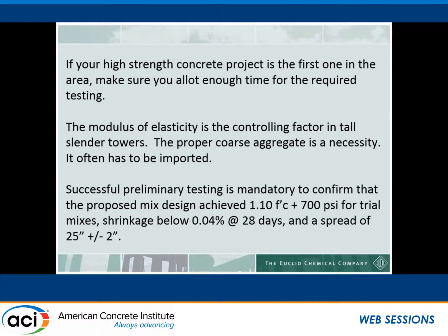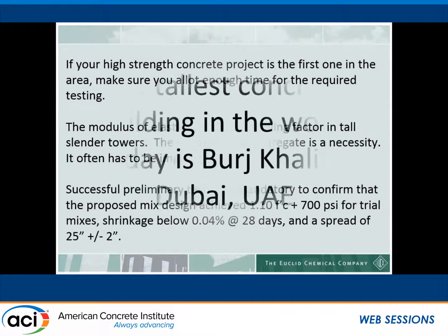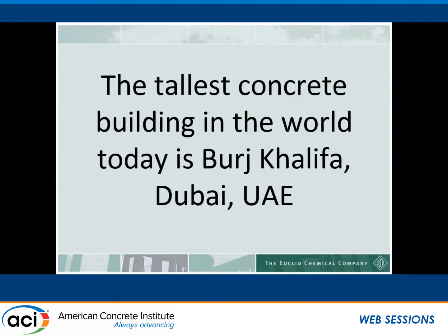Modulus of elasticity is a controlling factor in tall, slender towers. The proper coarse aggregate is a necessity and often has to be imported to obtain the right results. Successful preliminary testing is mandatory to confirm that the proposed mix design achieves 1.1 F prime C plus 700 PSI for trial mixes, with shrinkage below 0.04% at 28 days and a spread of 25 inches plus or minus 2 inches in diameter for self-consolidating concrete.